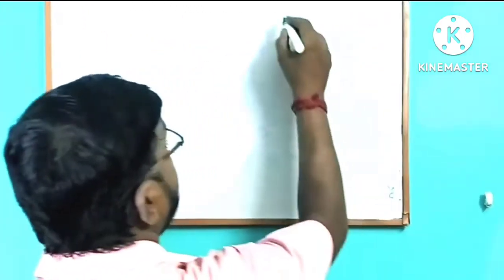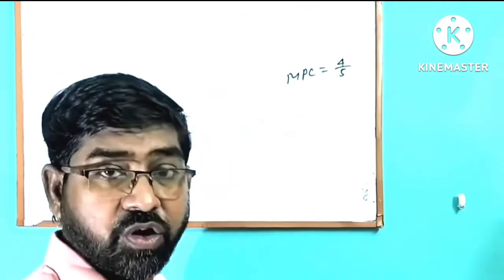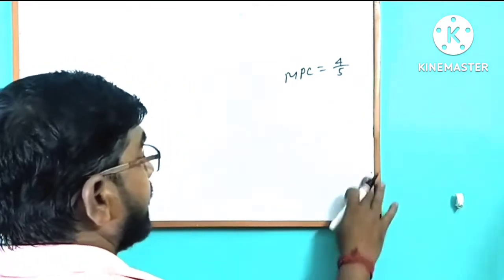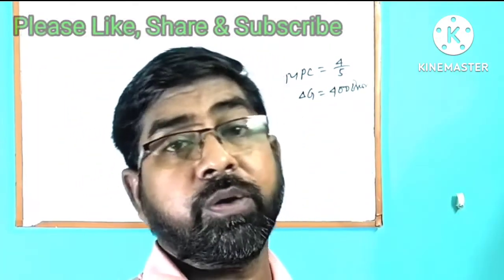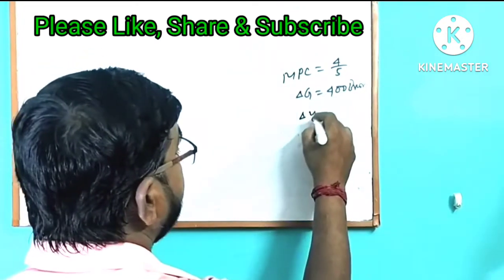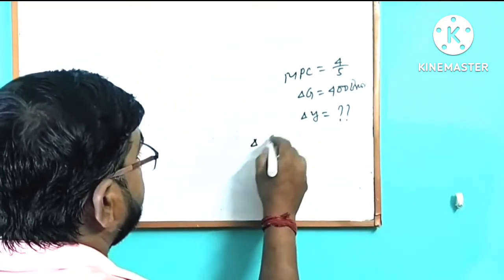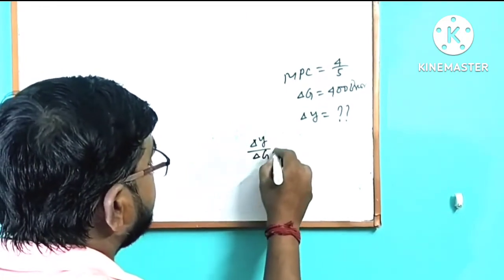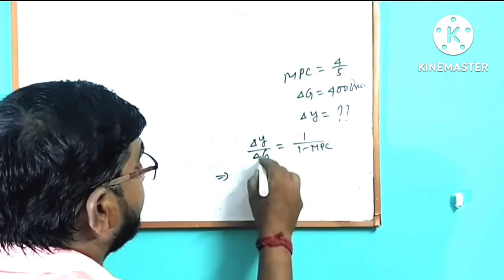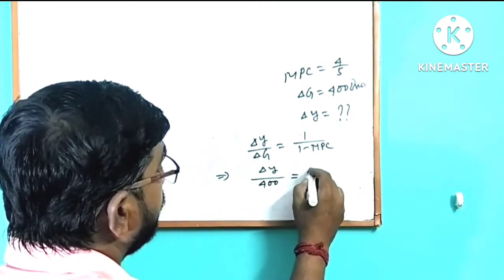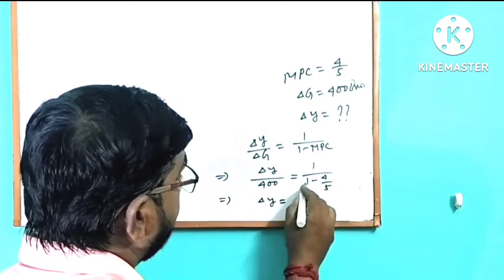So you can see that the MPC is 4 by 5. Even government expenditure is 6. So it is 6. So the value of Y is 6. Delta y equals to 1 by 1 minus MPC times delta g.